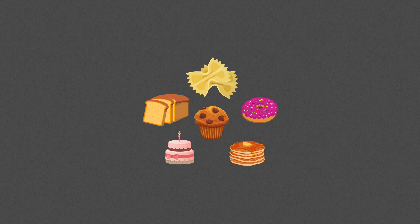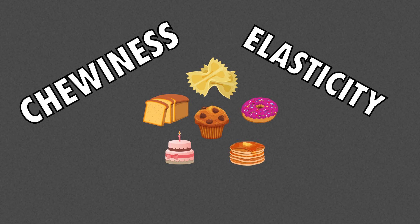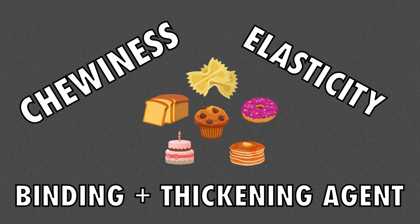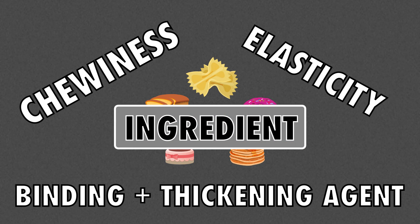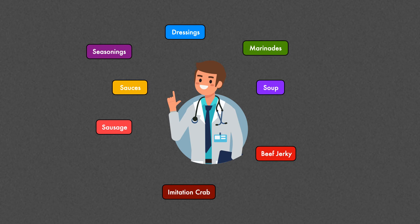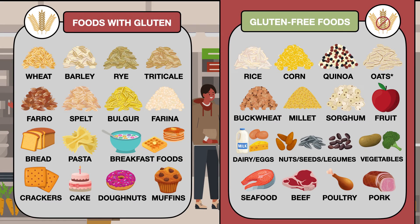One of the main reasons wheat is desirable for making foods like bread, pasta, and baked goods is that the gluten provides a chewiness and elasticity that's difficult to replicate with gluten-free grains. This property, along with its ability to act as a binding or thickening agent, also makes gluten a popular ingredient in food processing, even for foods that are otherwise gluten-free. Gluten can be found in seasonings, marinades, dressings, and sauces; soup; processed meats like sausage, beef jerky, and imitation crab; chocolate; ice cream; and candy. So, close attention must be paid to what's added to food, even if it is gluten-free in the whole food source.